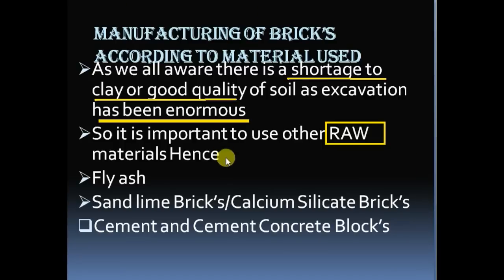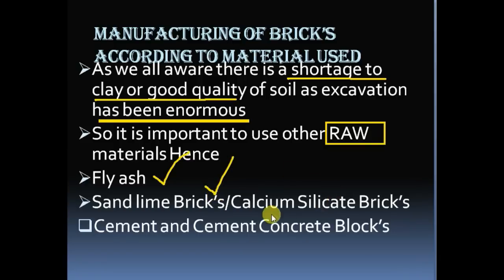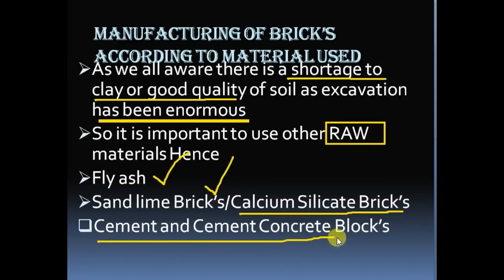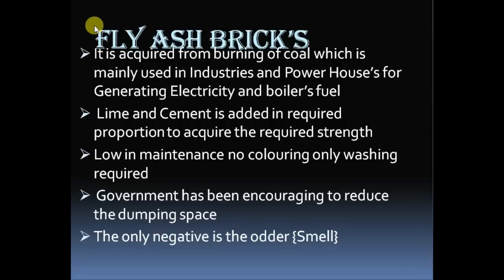It is important that we use some other raw material. The different sorts of raw materials we can use are: number one, the fly ash brick; and number two, the sand lime brick. Sand lime bricks are also known as calcium silicate bricks. From these materials we are also able to create cement and cement concrete blocks.